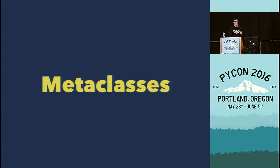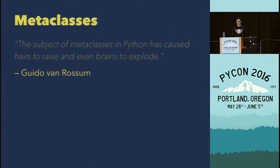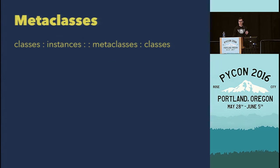Now let's talk about metaclasses. A wise man once wrote: 'the subject of metaclasses in Python has caused hairs to raise and even brains to explode.' That was Guido, of course. I promise none of your brains will explode. At the core, the idea of metaclasses is quite simple and can be shown with an equally simple analogy: classes are to instances as metaclasses are to classes. Classes create new instances; metaclasses create new classes. The word metaclass just means it's one abstraction from a class — it has nothing to do with metadata.